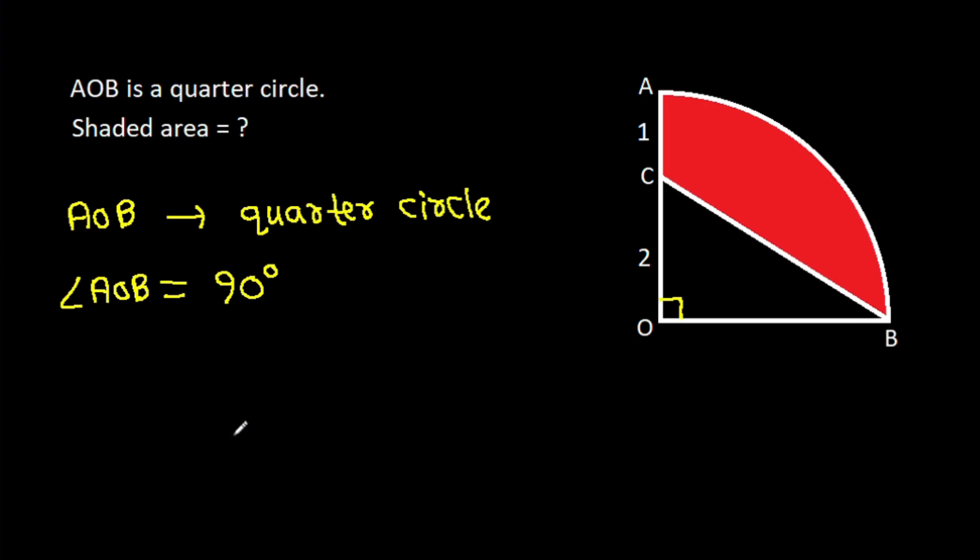And also, AO will be equal to BO. That will be radius.